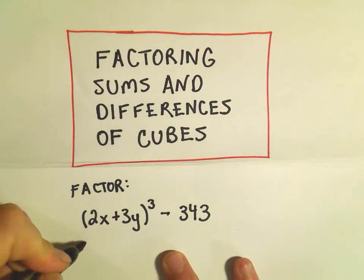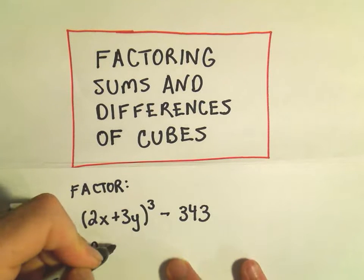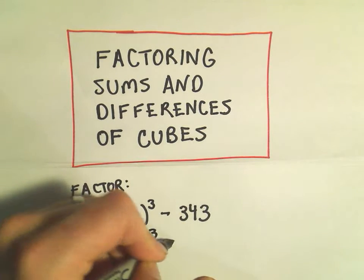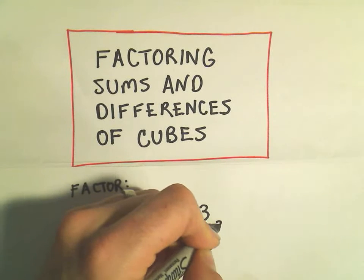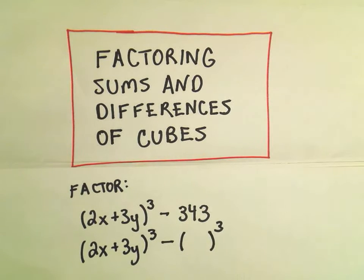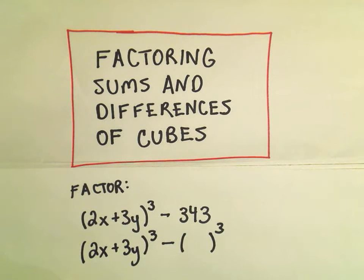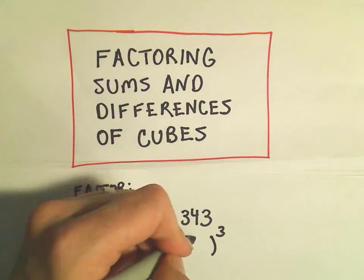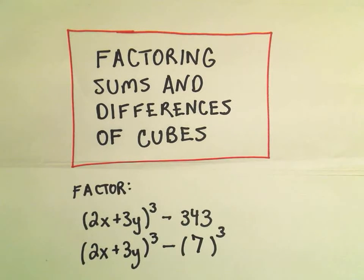The first thing I'm going to do is simply rewrite this as 2x plus 3y. I'll leave the first part alone. But then I want to think what number cubed is 343. This is probably one that's not on the tip of everybody's tongue. It turns out that 7 cubed is 343.